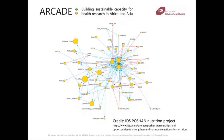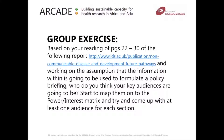Let's take a few minutes to do a group exercise. On the slide there's a link to a report — please read pages 22 to 30. Once you've had a chance to do this, work in groups or pairs and, on the assumption that the information within the report is going to be used to formulate a policy brief, start to think about who your key audiences might be. Using the power interest matrix, once you've built a list of your key stakeholders, map them onto the matrix and try to come up with at least one audience for each section. Take about 15 minutes to discuss this in groups, then come back into plenary and discuss what you've come up with.